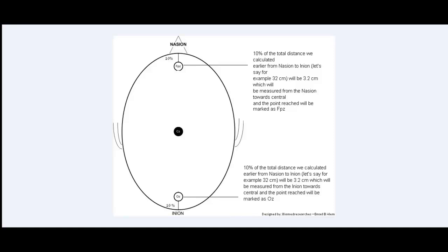10% of the total distance from nasion to inion — which we said, as an example, is 32 centimeters — will be 3.2 centimeters. This is measured from the nasion towards the central endpoint, and the point reached will be marked as Fpz, or frontopolar zone. The same applies to the inion: we measure 10% of 32 centimeters, which is 3.2 centimeters, and the point reached will be Oz, or occipital zone.